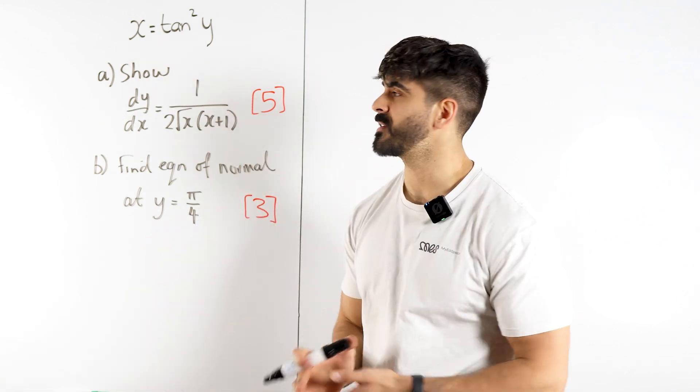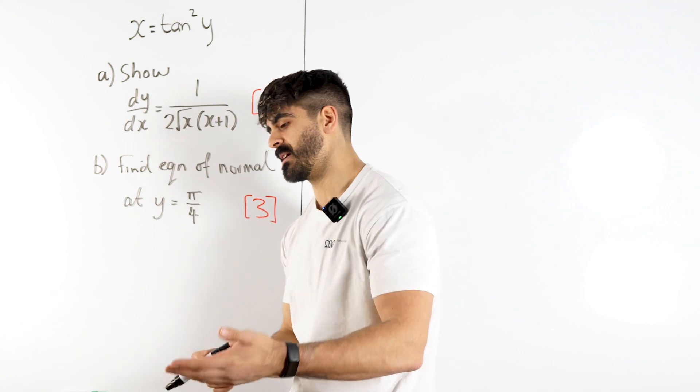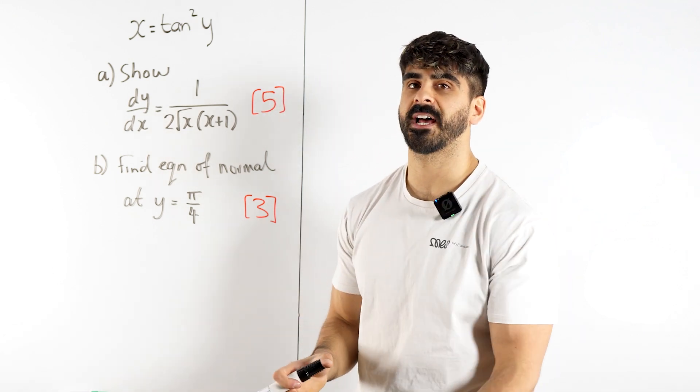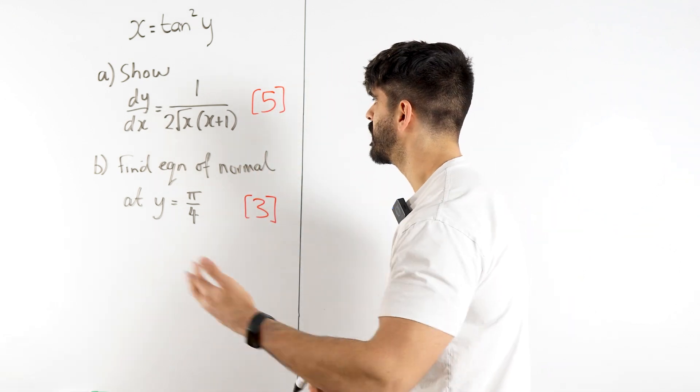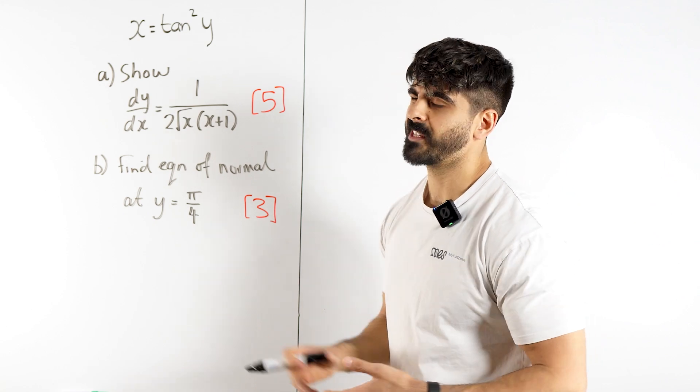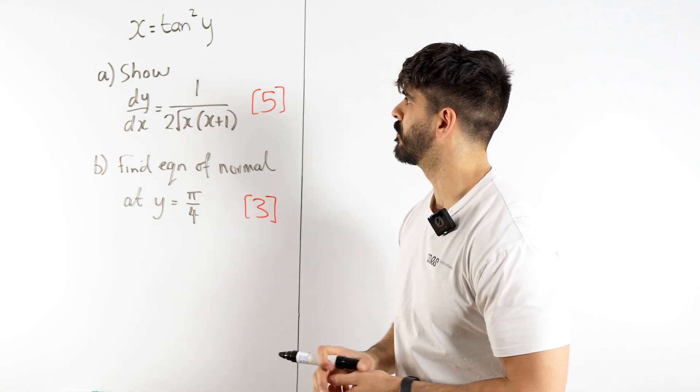Either way the process is basically the same, it's just in further maths they would be expected to know that arc tan differentiates to 1 over 1 plus x squared, we don't necessarily at normal A level maths.